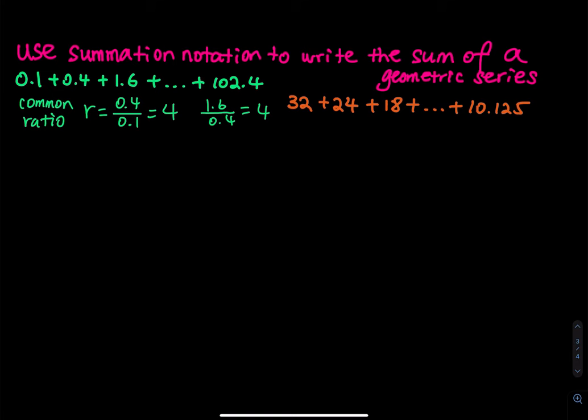What is the first term? Very clearly the first term is equal to 0.1. They asked me to use summation notation, so to get the summation notation I have to find out the pattern. I also need to know how many terms there are, because we go from 0.1 all the way to 102.4, and I don't want to try the numbers one by one — that is going to take forever. So I will use a different method.